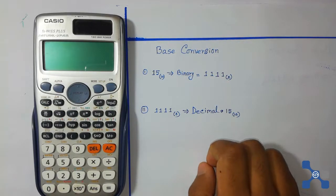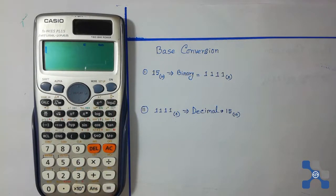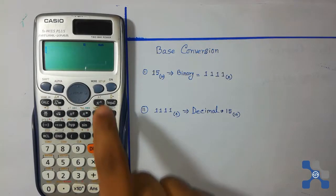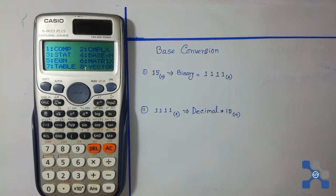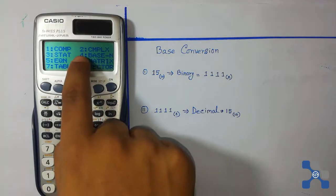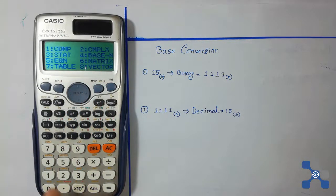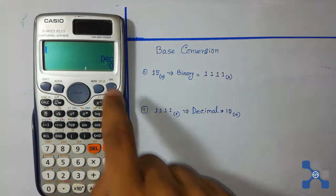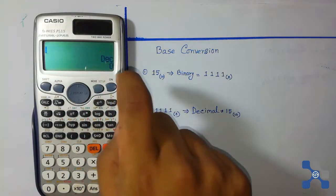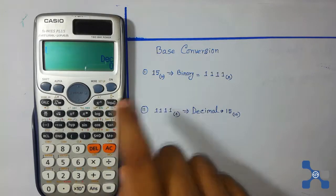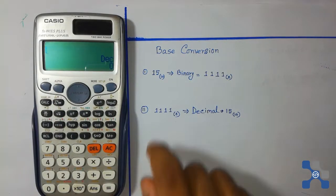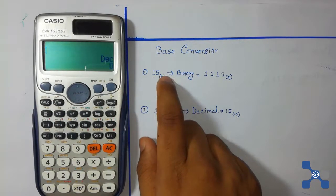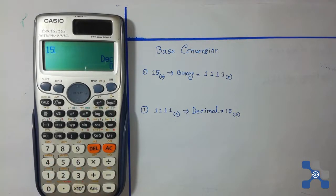Press the ON button, then press the MODE button. We can see that 4 is for base conversion, so press 4. Now we see DEC, which means the calculator is now in decimal mode. Enter the decimal number — here the decimal number is 15 — so press 15 and then press the equal button.